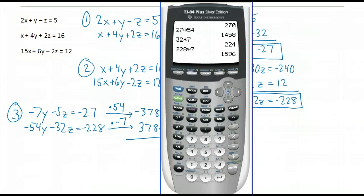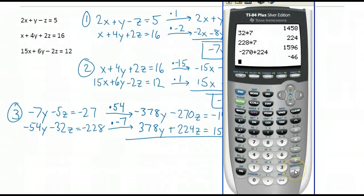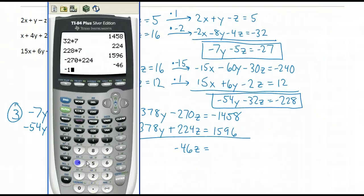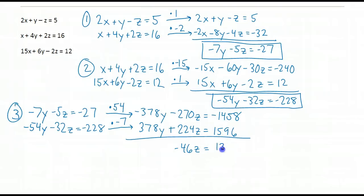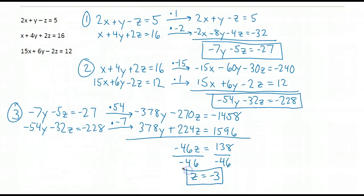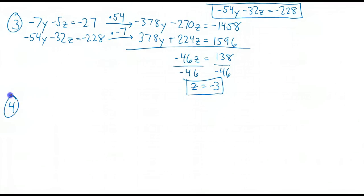Adding the equations: negative 270 plus 224 gives me negative 46z, and negative 1458 plus 1596 gives me positive 138. Solving for z, I divide both sides by negative 46. Once I know z, Step 4 is to solve for my remaining variables — I still need to figure out y and x.